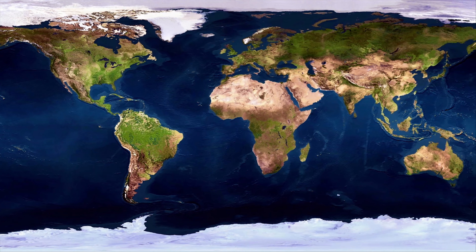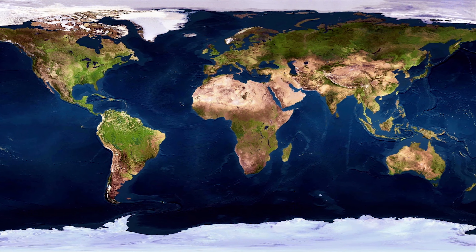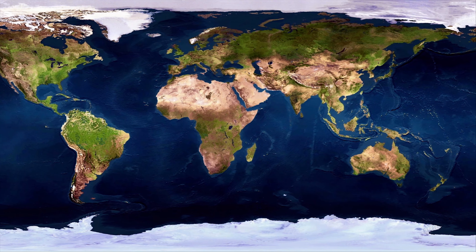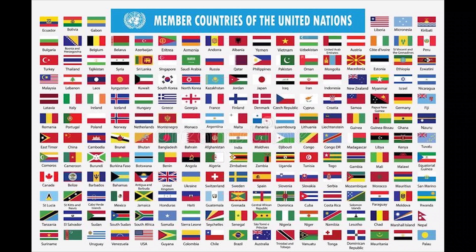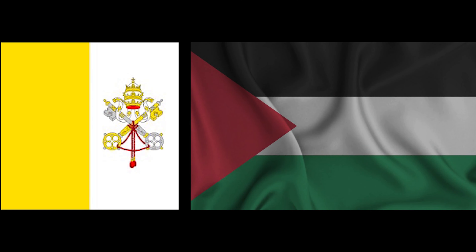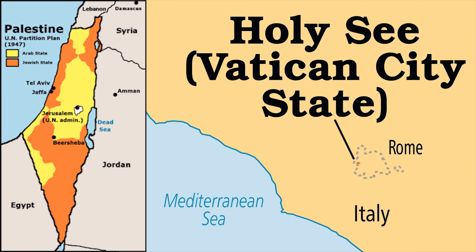How many countries are in the world in 2022? According to Worldometer, there are 195 countries in the world as of 2022. However, of these 195 countries, there are two that are not member states of the United Nations. These countries are the State of Palestine and the Holy See, which as exceptions are referred to as non-member observer states, but they are still regarded as countries.